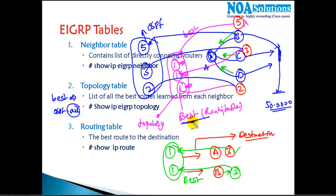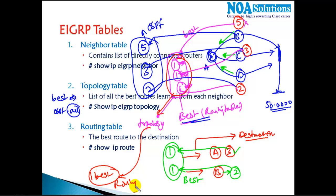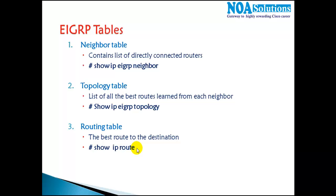From the best routes in the topology table, EIGRP picks one as the best route and writes it into the routing table. When advertising to a neighbor, only this single routing table entry is exchanged — not all three routes in the topology table. The same process happens between every two neighbors.